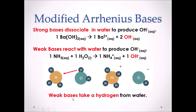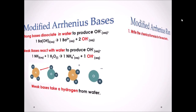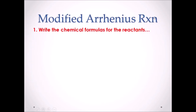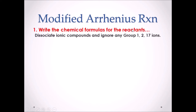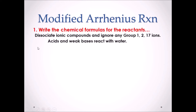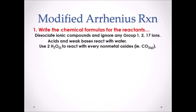Writing modified Arrhenius reactions. Step 1: Write the chemical formula of the reactants. If the substance is provided as an ionic compound, dissociate that compound and ignore any Group 1, 2, and 17 ions — they will not be included in the chemical reaction. Remember, acids and weak bases react with water.